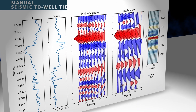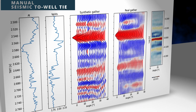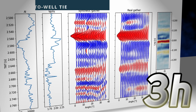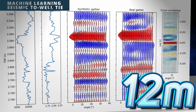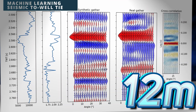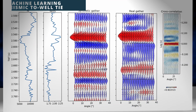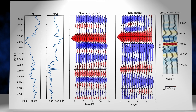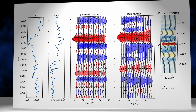What is shown on the screen is the manual seismic well tie that took over three hours to complete. The machine learning implementation takes about 12 minutes and produces a reasonable result that is more stable than the manual approach.